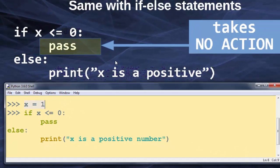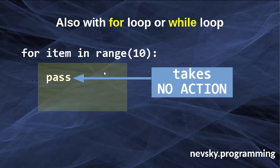Okay, then let's go to the next example. We can use the pass statement also with for loop or while loop. Instead of providing a code block inside our for loop or while loop we can just use the pass statement which takes no action.